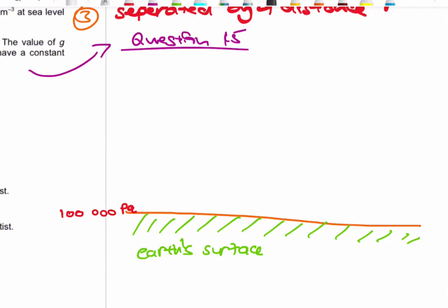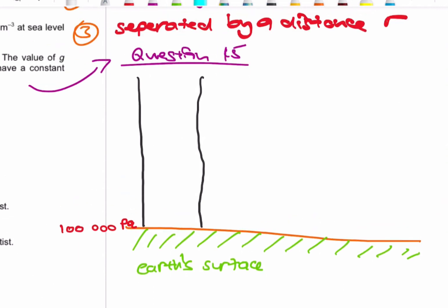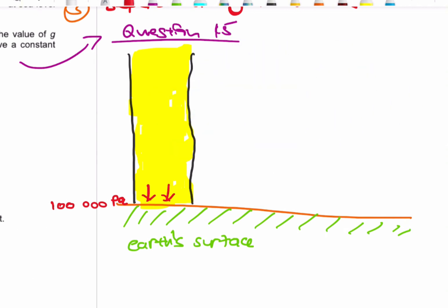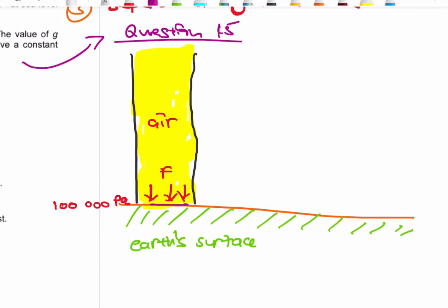Let me take a column of air. In this column you have air pressing down over a certain area A, causing a force F. That force over that area gives a pressure of 100,000 Pascals. This column extends as far as our atmosphere. The density at the surface is 1.22 kg/m³.